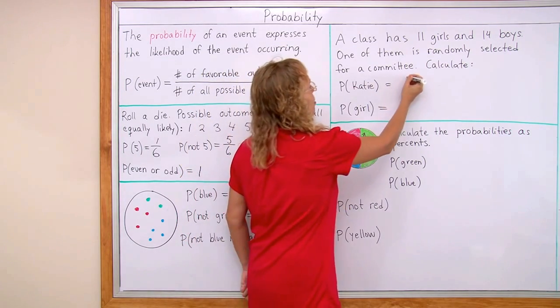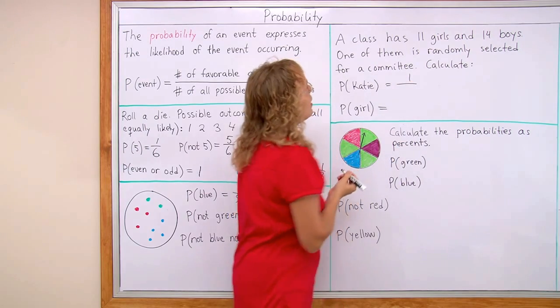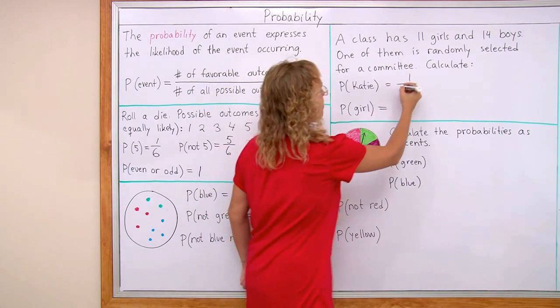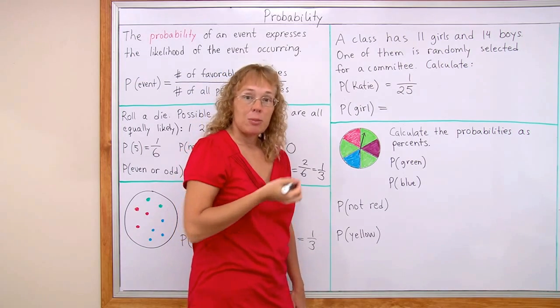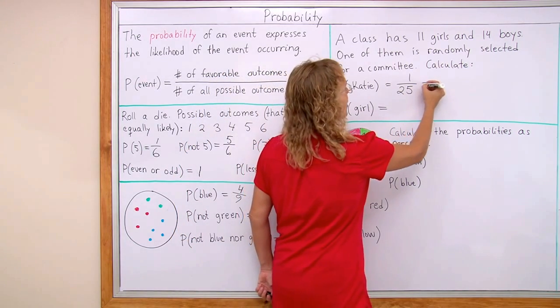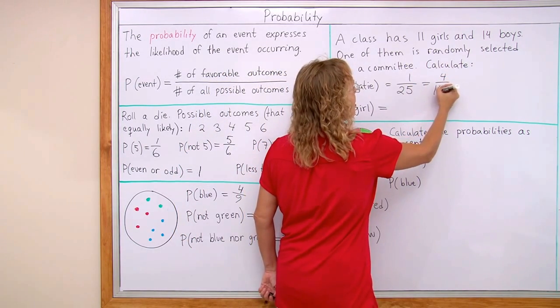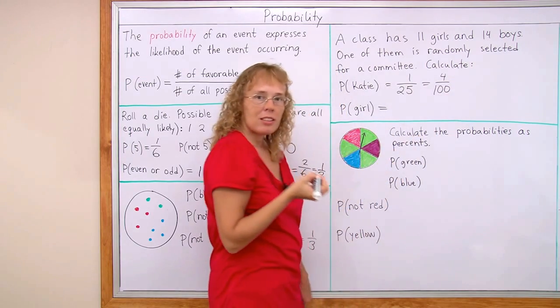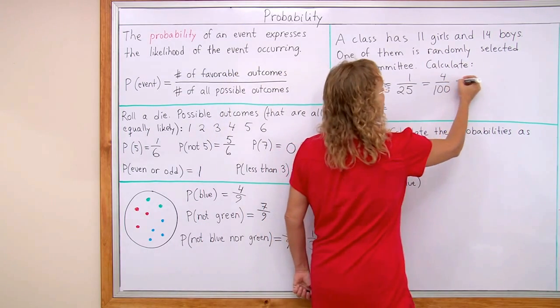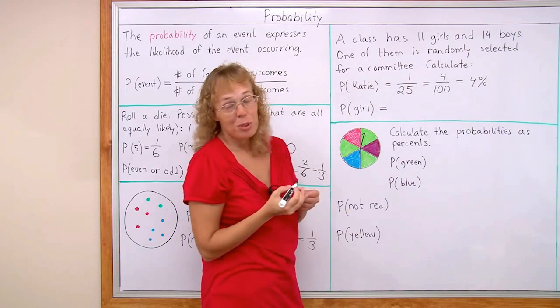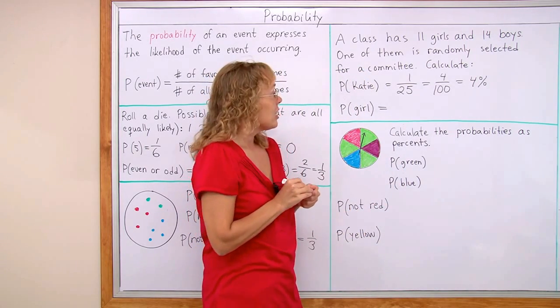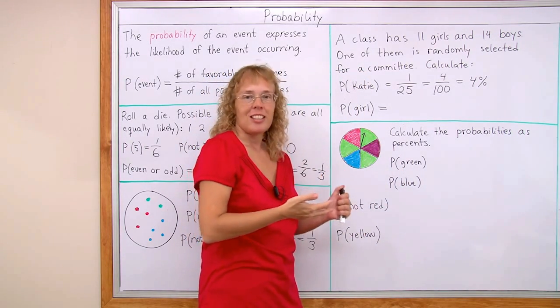Then there's one favorable outcome which is Katie. And then there are 25 in total. I'm gonna now express this as a percent. First I'll write it as an equivalent fraction with a denominator 100. And so this is four percent. Katie has a four percent chance of getting selected. And so does every other kid in that class.